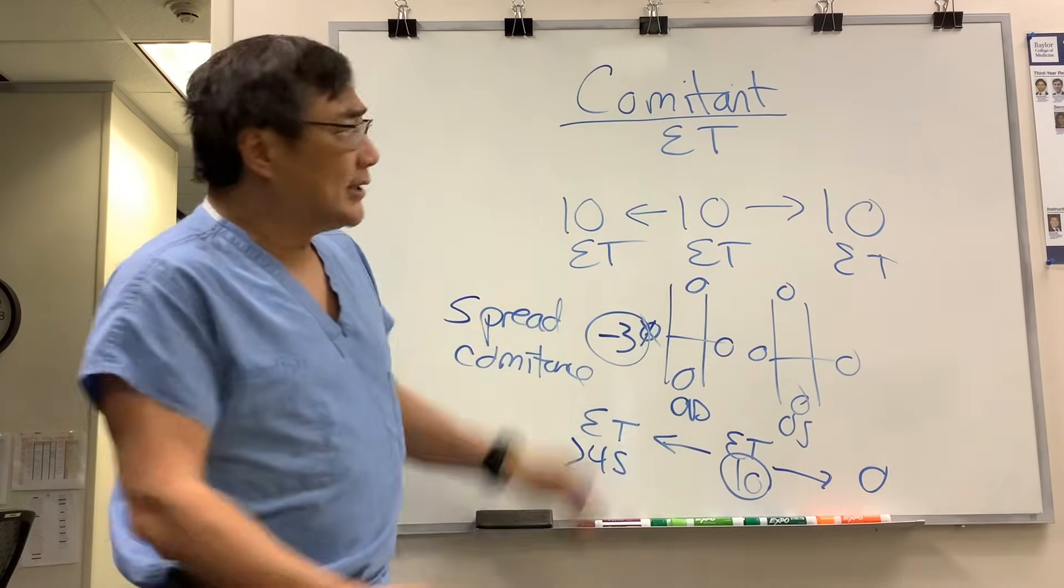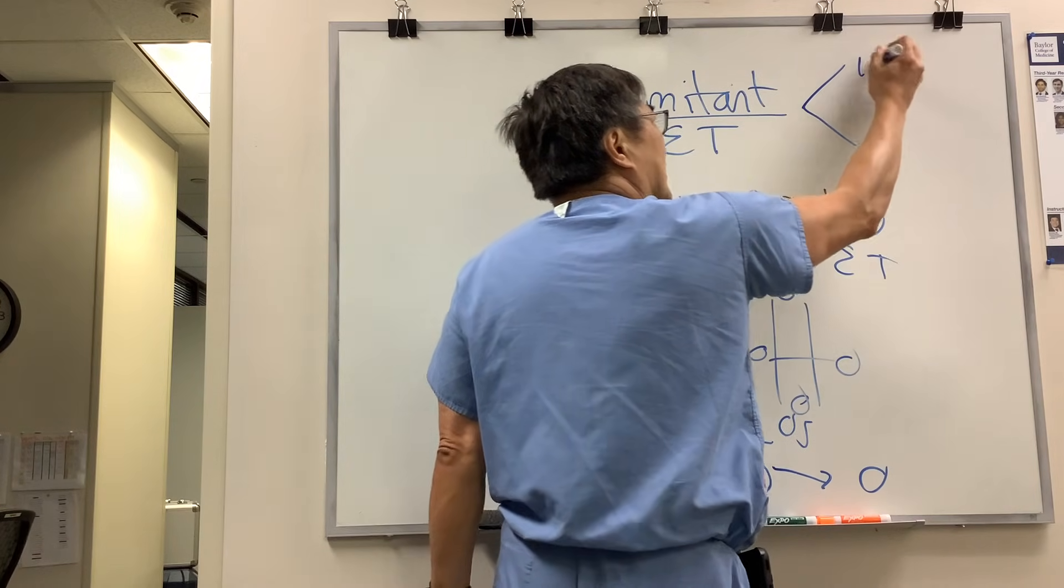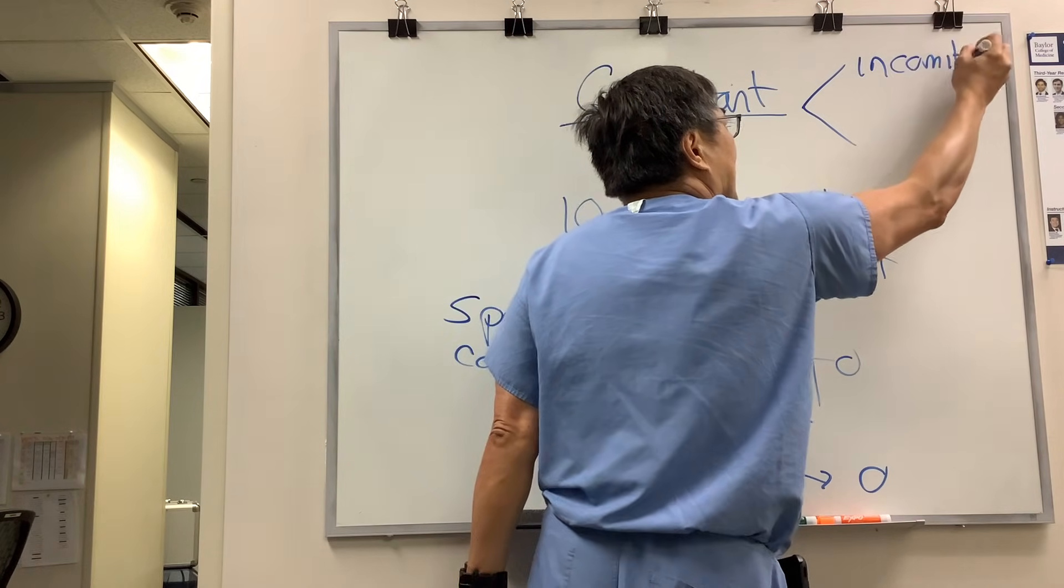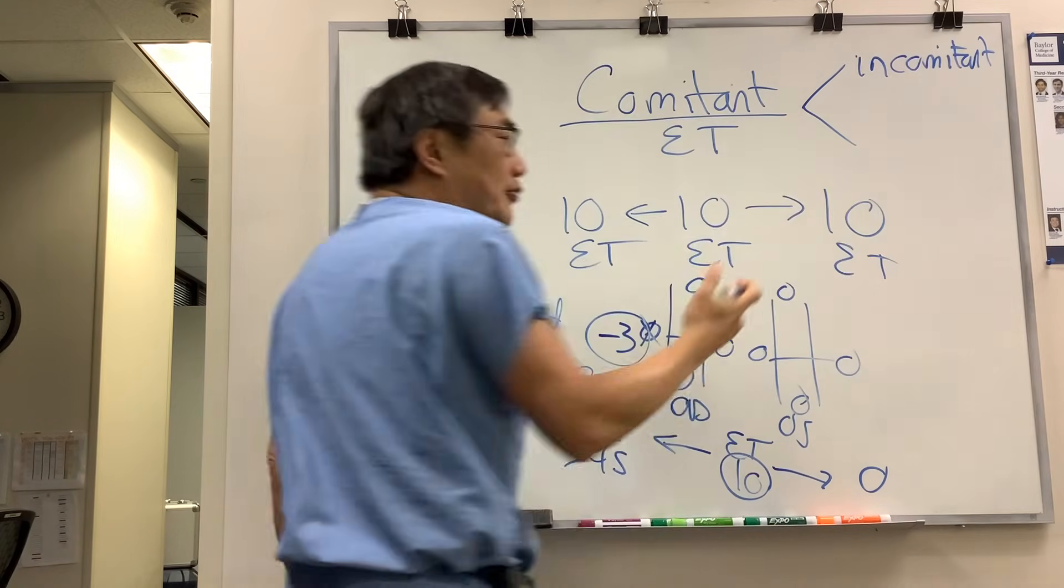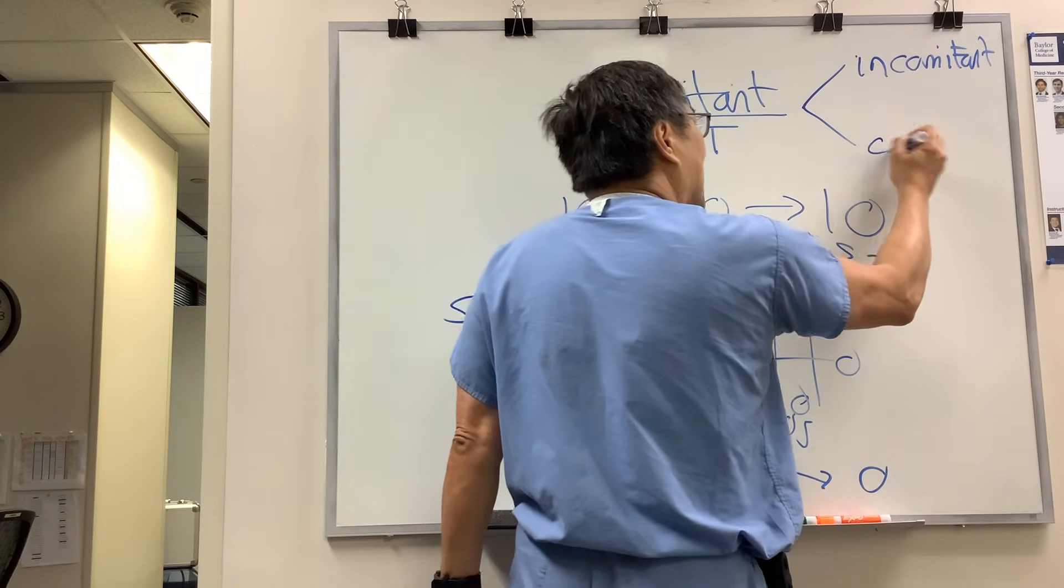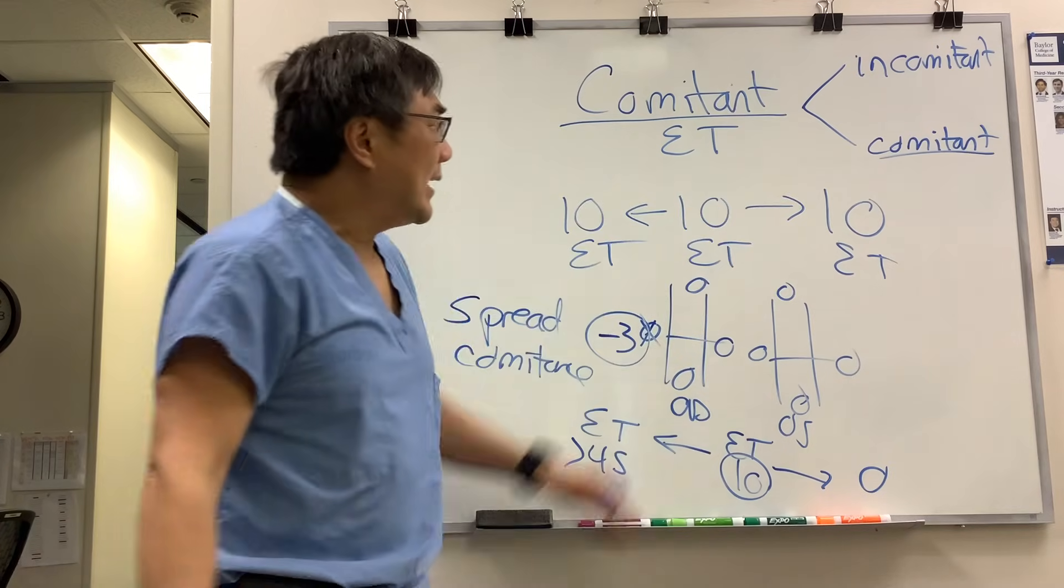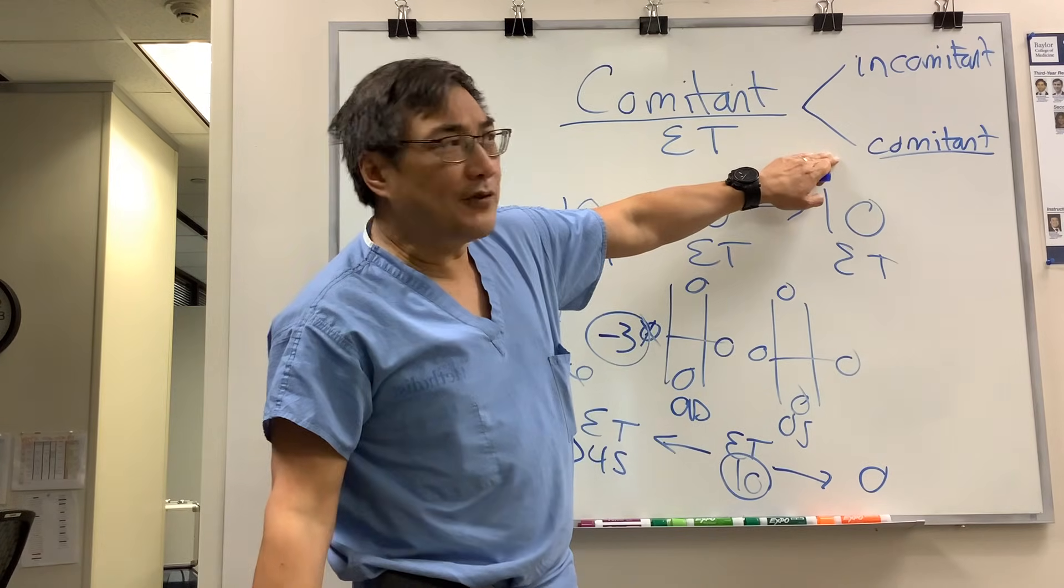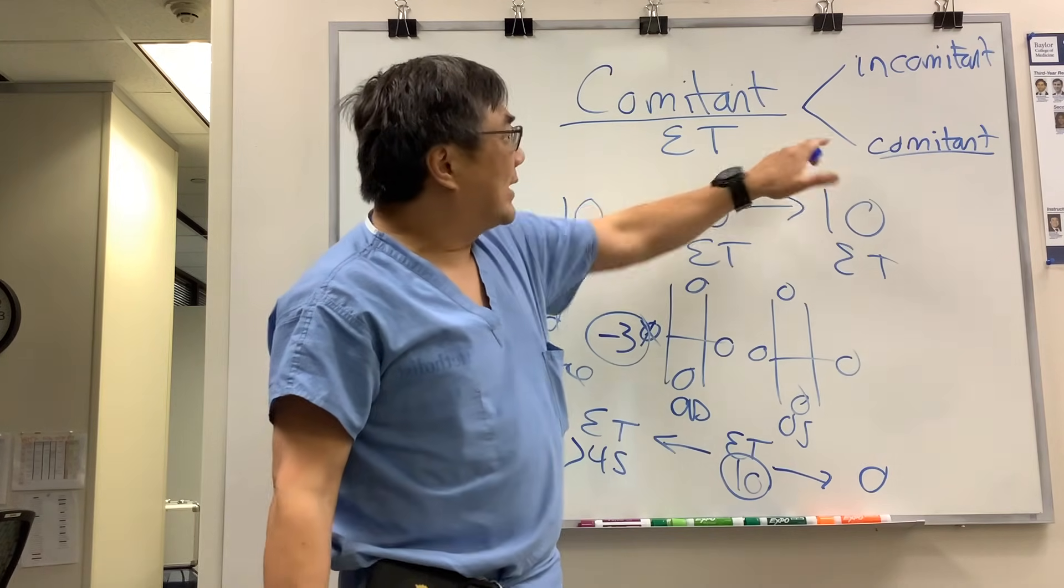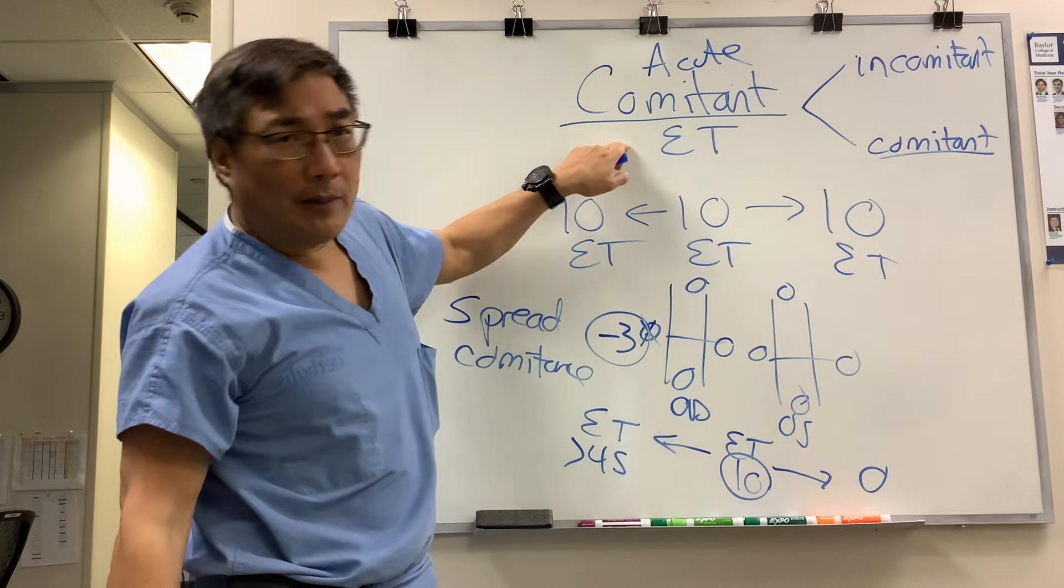There's two reasons you need to know about the comitant from neuro-ophthalmology. One is that it was started incomitant, and as it was improving, it became comitant over time from spread of comitance, or it was comitant from the start. It's comitant now, and it was comitant then, and that could still be breakdown of fusion. So an acute and comitant deviation could still be neuro-ophthalmic.